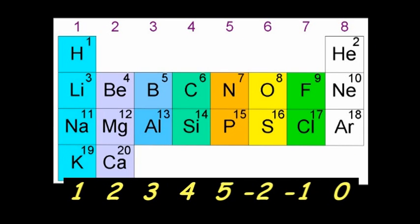This table shows the first 20 elements. All are keen to react except column 8, which has complete outer shells. The most common valences for the first 20 elements are shown below.